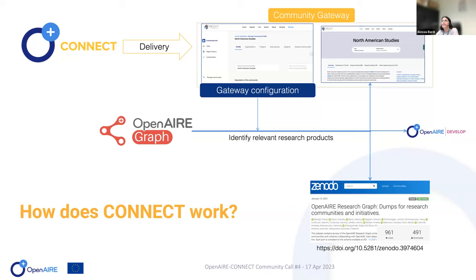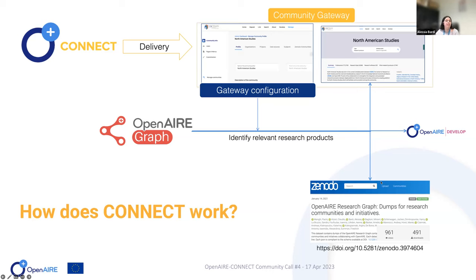With Connect, we deliver a gateway. We need to identify the slice of the graph that is relevant for you. The gateway offers an administration interface where you can provide a configuration — the criteria of inclusion. These criteria are applied to the graph and used to tag the research products that are relevant for you. Based on this, we have an end-user portal with discovery functionality, and we also publish the metadata records in a dedicated dataset on Zenodo, so you can get the metadata and build your own portal or additional added-value services.